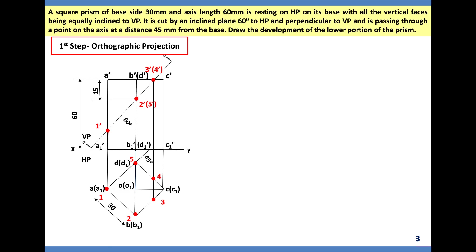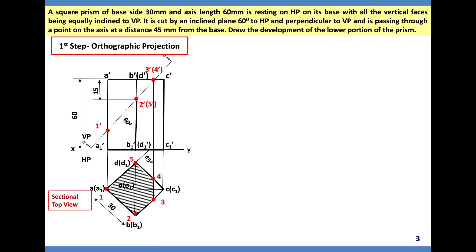Now transform the views into retained portion (thick lines) and removable portion (thin lines). The top view shows what the observer can see, with hatching applied to the cut section. This is called the sectional top view; the upper view is called the sectioned front view.